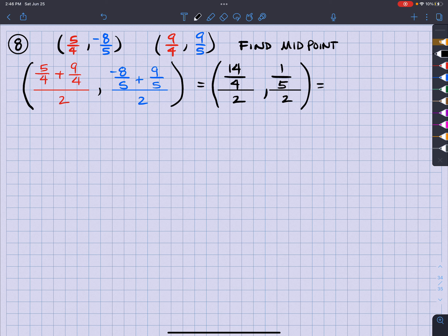Well, 14 over four is seven halves. So seven halves divided by two is going to be seven over four, comma. One fifth divided by two is going to turn out to be one tenth. And that ladies and gentlemen is going to be choice C.